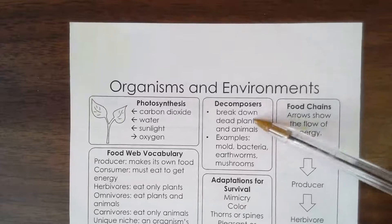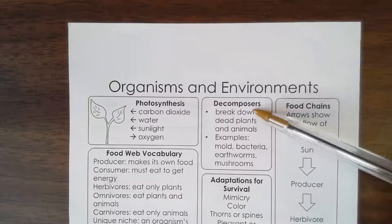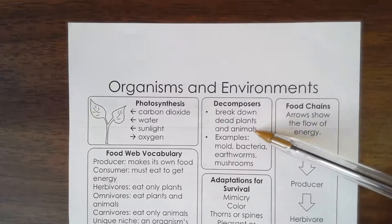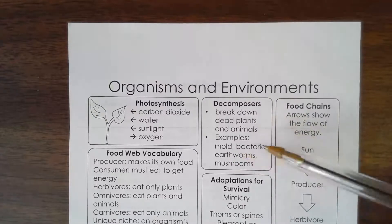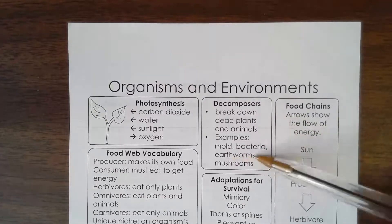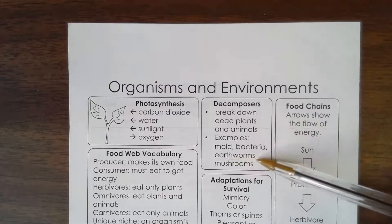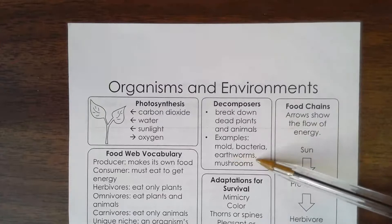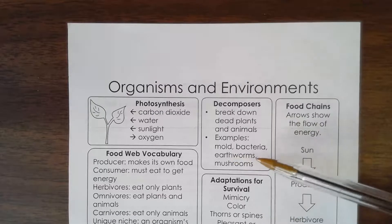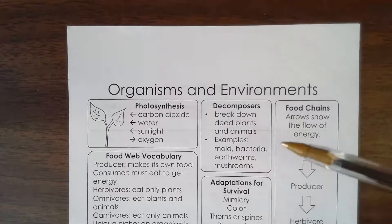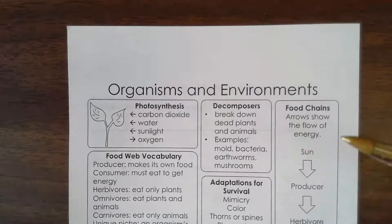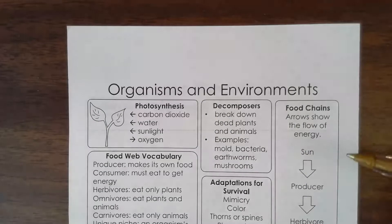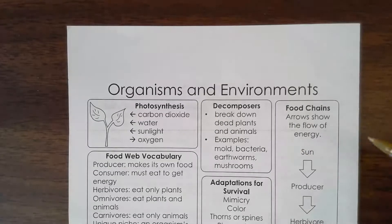Let's talk about decomposers — they break down dead plants and animals. Examples are mold, bacteria, earthworms, and mushrooms. An earthworm is a decomposer because they live in the soil, eat all the stuff, it goes through their body, they process it, and then they deposit it.